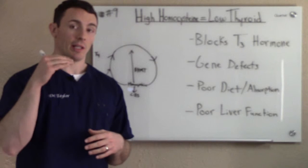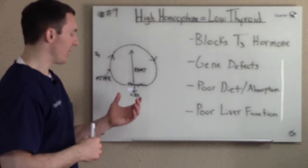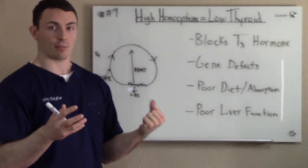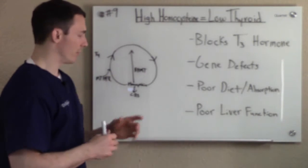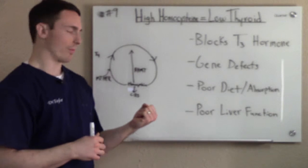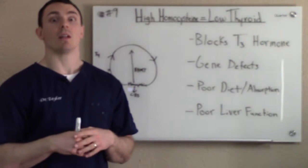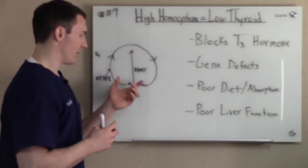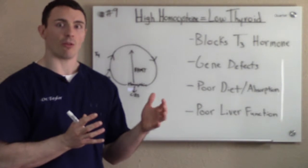The CBS gene — there's a CBS up-regulation gene and a CBS down-regulation gene. We're going to talk about the down-regulation gene. What CBS does is it pulls homocysteine down into another part of the cycle to make glutathione, which is the main antioxidant in the body. If you have a down-regulation in the CBS gene, you're going to have pooling of homocysteine. If we found both a CBS down-regulation issue and a BHMT issue, you're going to have really high pooling of homocysteine through the cycle, which is going to cause issues.